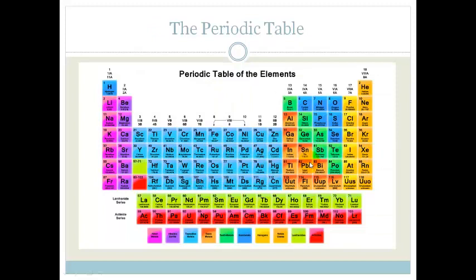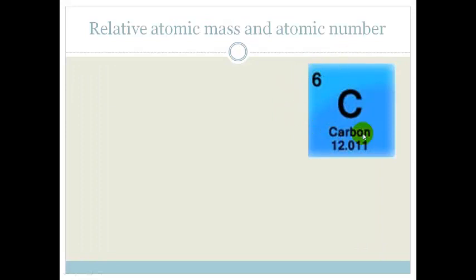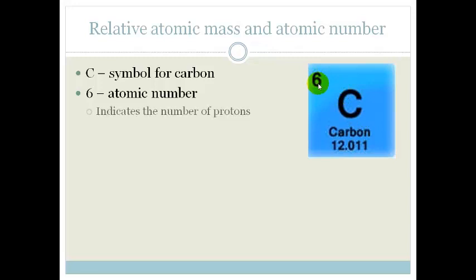Now the periodic table is a laid out table of elements as we know. But what's important about the periodic table is that each of these little blocks gives us a lot of information about the actual atom and its structure. So let's look at this one, carbon, since we were looking at the carbon atom. You will see that here we have got the C, which is the symbol for carbon. We've got 6, which is the atomic number. Now the atomic number indicates the number of protons. Since every atom on the periodic table is considered to be neutral, this is also the number of electrons. And it is given the symbol Z.